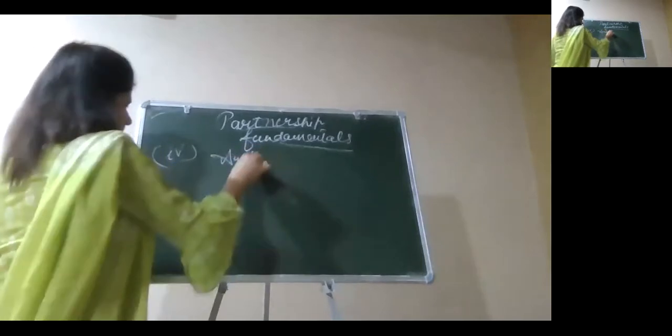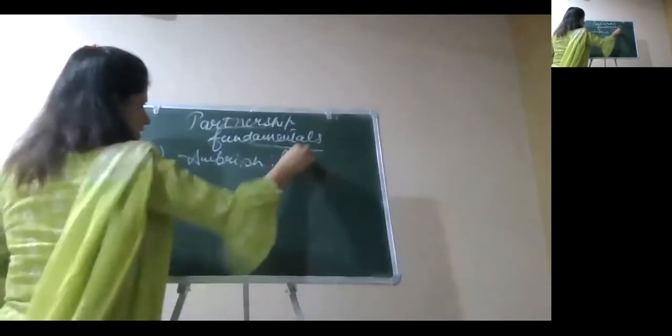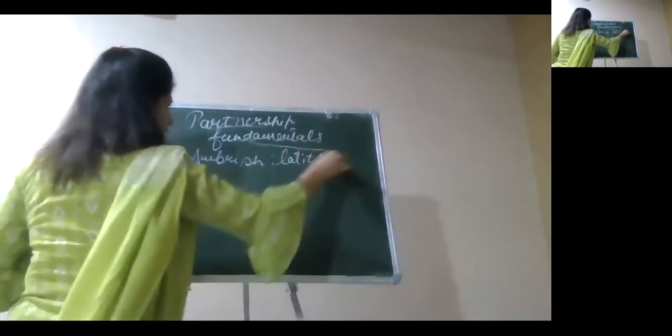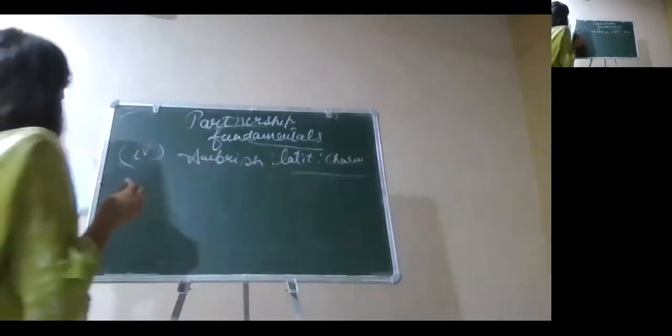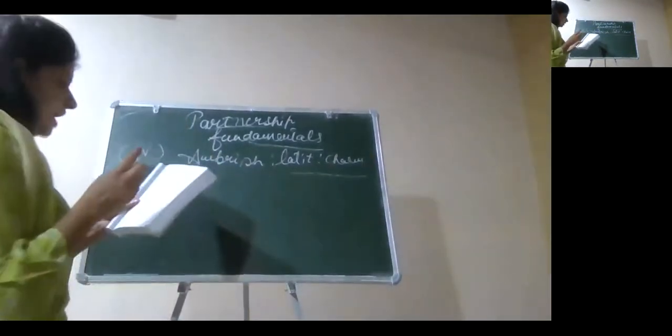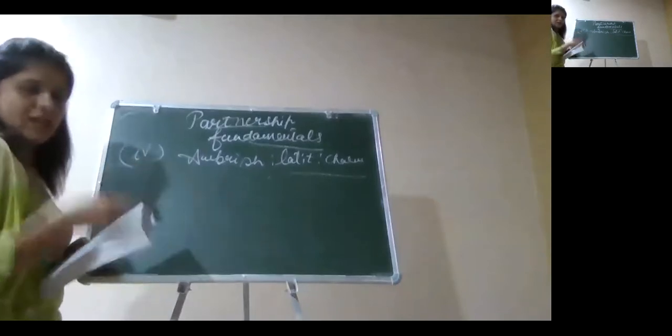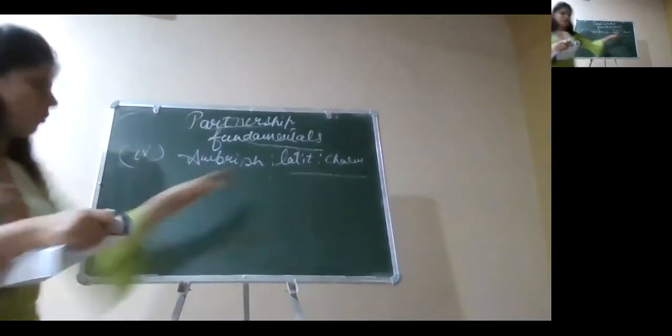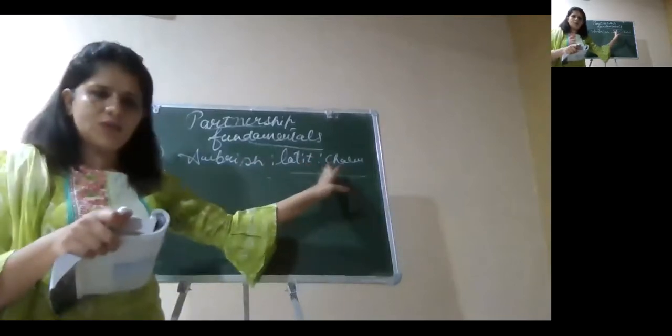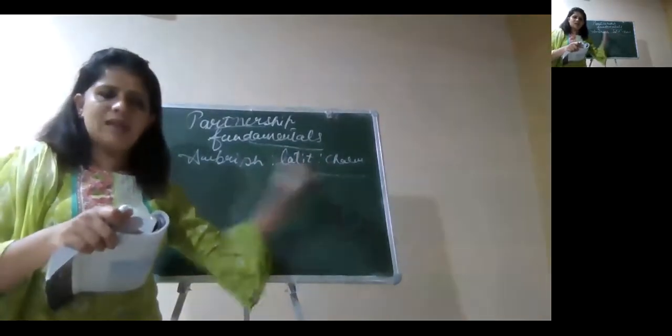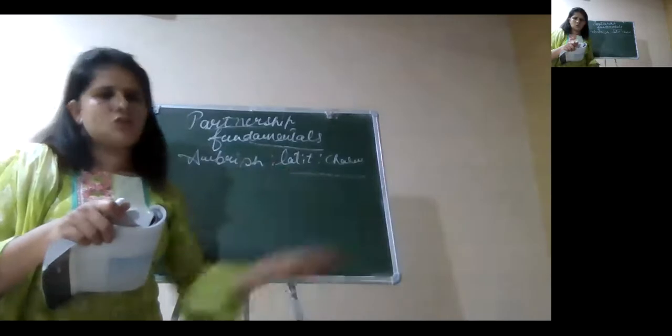We were having Ambrish, then Lalit, then Charu. So Ambrish has withdrawn 10,000 from the firm for personal use and Lalit and Charu demand interest on drawing at the rate of 30%. We will not be going with the view of Lalit and Charu because if the deed is silent, Ambrish is not supposed to pay interest on his drawing, right?